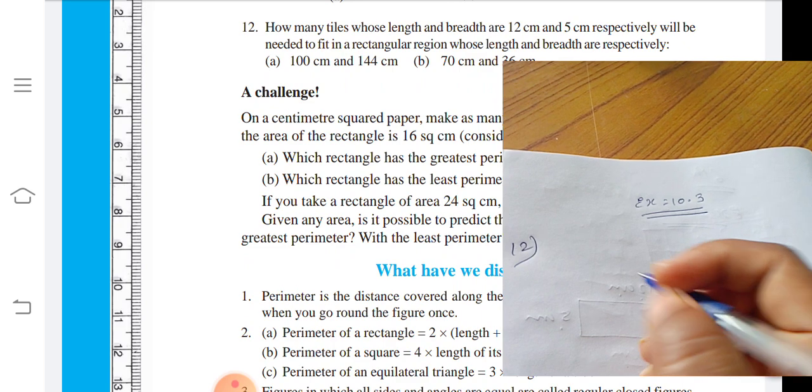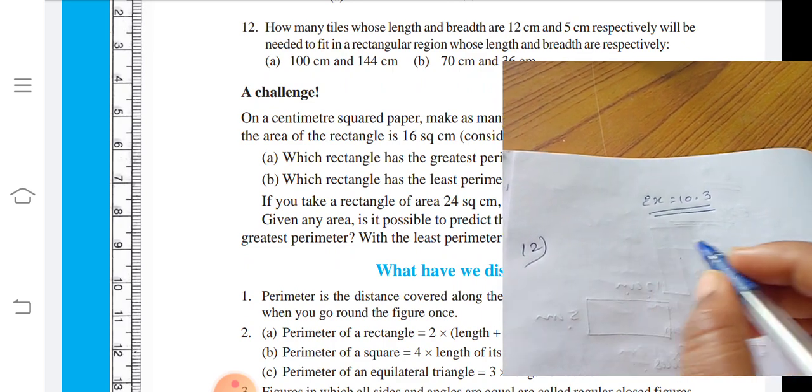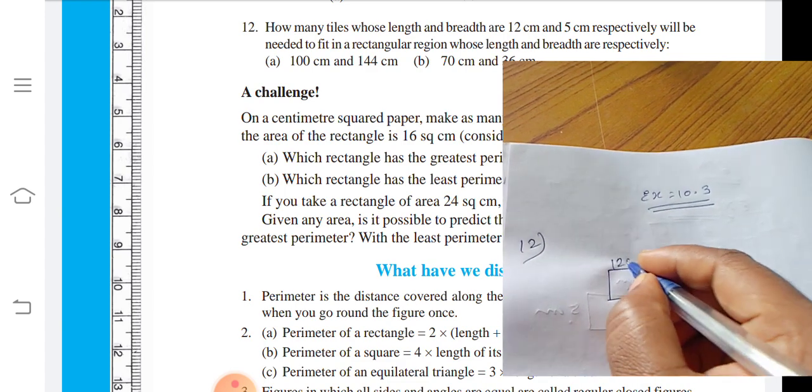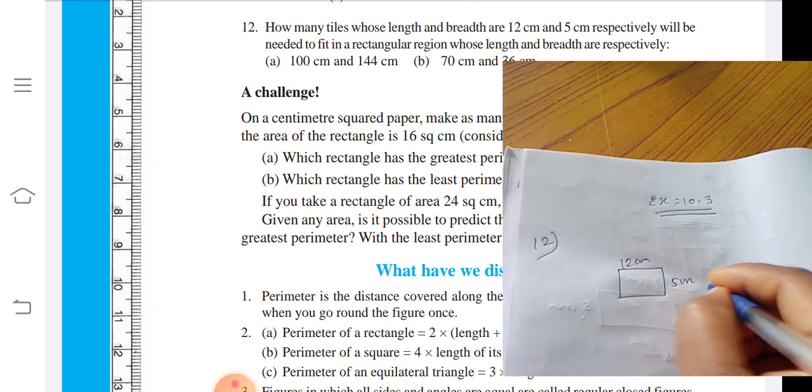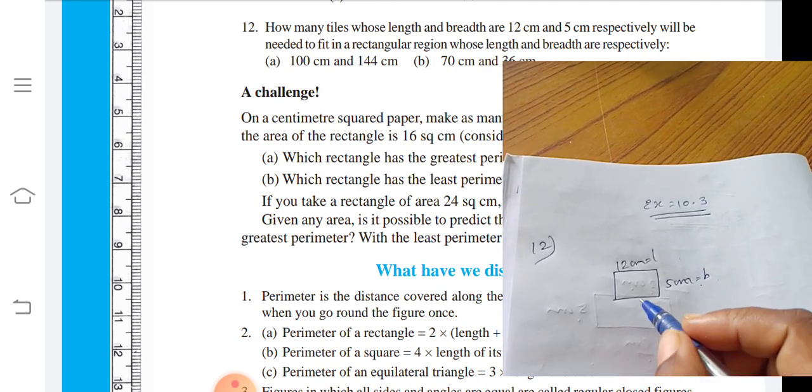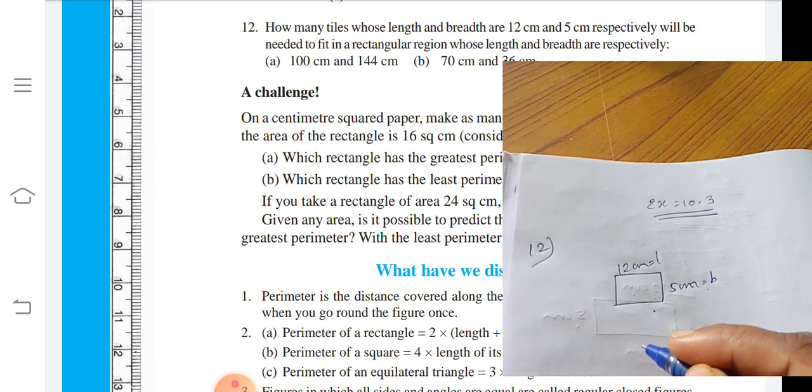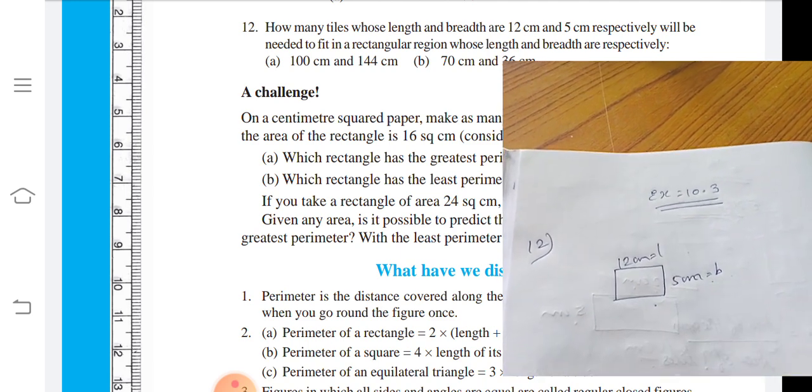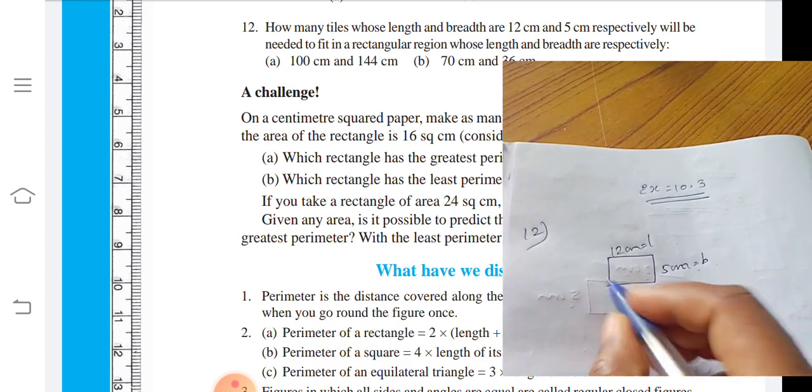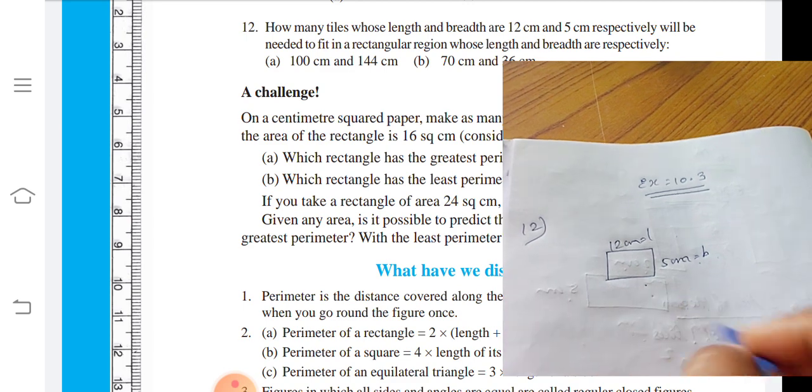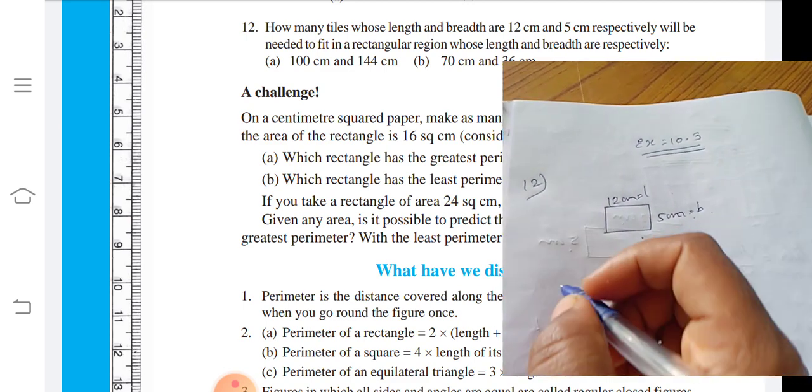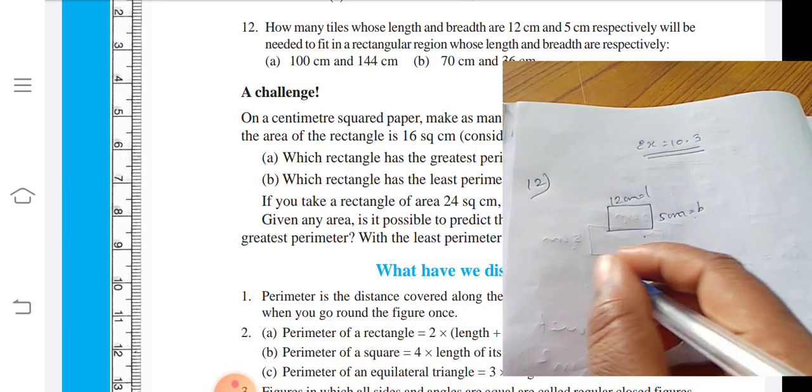We are going to solve the problem. The tiles have different sizes - the tile is 12 cm by 5 cm length and breadth. How many tiles are needed for the rooms? First, what do we need to do? We need to find the area. For every room, we need to divide to find the tiles.